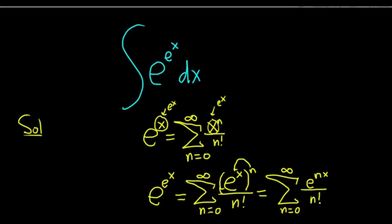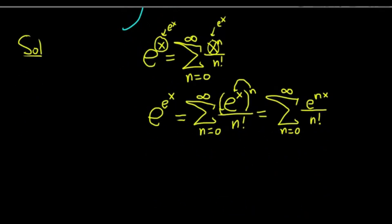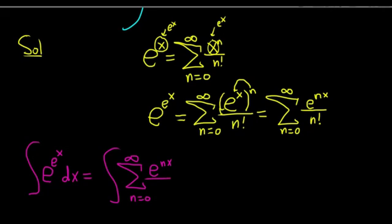All we have to do now is integrate. So we have the indefinite integral of e to the e to the x dx. That's equal to the indefinite integral of the infinite sum as n runs from 0 to infinity of e to the nx over n factorial dx. All we have to do now is integrate each piece.